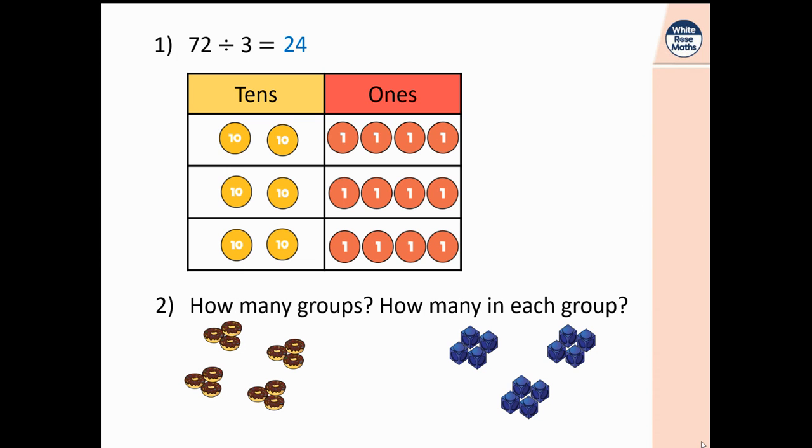Let's have a look at these groups here. So how many groups do I have and how many in each group? If you have a look at the doughnuts, you can see that I have got four groups, and in each of those groups I have got three doughnuts. Let's have a look at the cubes here. How many groups do I have? Well this time I have got three groups, so I've got three groups or three piles of blocks and in each group I have got four in each.